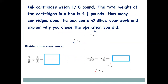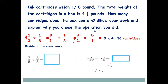Ink cartridges weigh 1/8 pound each. The total weight of cartridges in a box is 4½ pounds — how many cartridges does the box contain? Do 4½ ÷ 1/8. Convert: 4½ = 9/2. Then 9/2 × 8/1 — simplify 2 and 8: 2 ÷ 2 = 1, 8 ÷ 2 = 4. Answer: 9 × 4 = 36 cartridges.